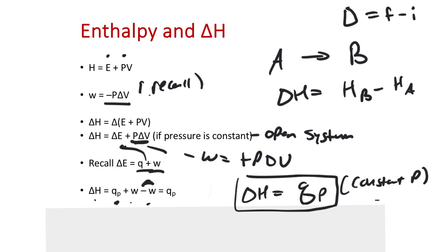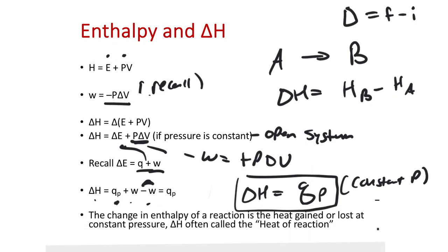Enthalpy is the heat change that accompanies a reaction occurring in an open system. The sign H for heat is kind of synonymous — a lot of times people call delta H the heat of a reaction. The change in enthalpy of reaction is the heat gained or lost at constant pressure, and delta H is often called the heat of reaction.